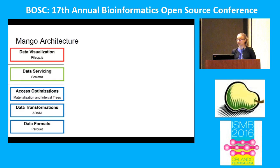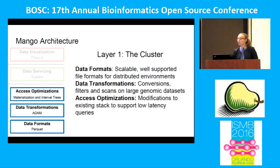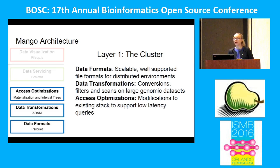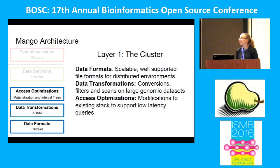Here's an overview of the Mango architecture. The nice thing is it takes a pretty layered approach, so you can substitute out different layers — for example, a different front-end visualization. At the very bottom is the cluster layer: we have our data formats, loading Parquet files but also supporting BAM, VCF, and BED files. On top of that we have ADAM for data transformation, enabling convergence on genomic datasets and whole genome scans before the user even uses the tool. Lastly, we have access optimizations specific to supporting low-latency queries.